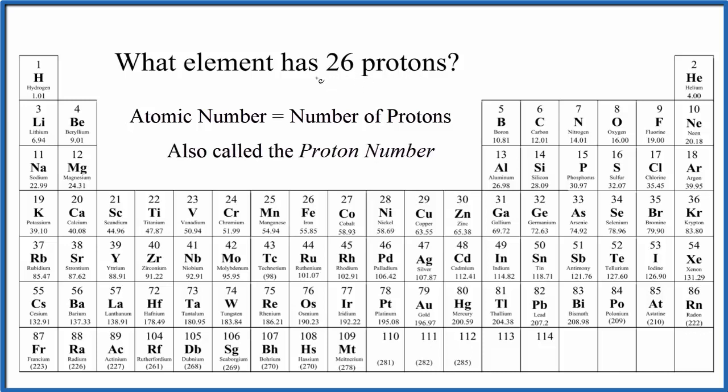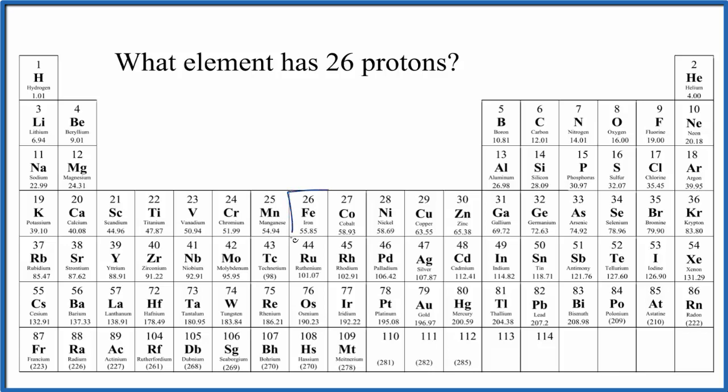So all we need to do is find the element with an atomic number of 26. The atomic number is the number above the element. So we find 26. Here it is right here.